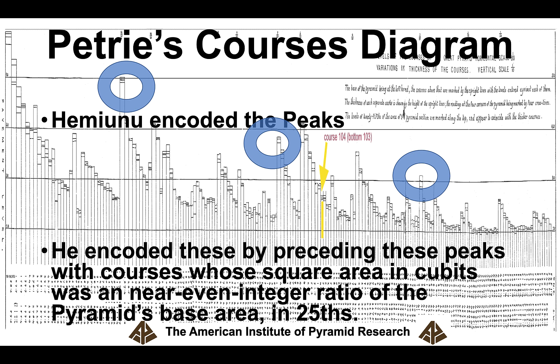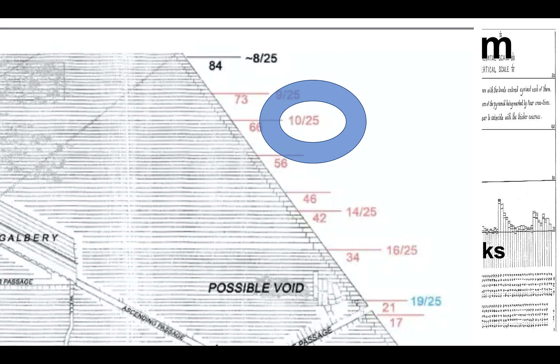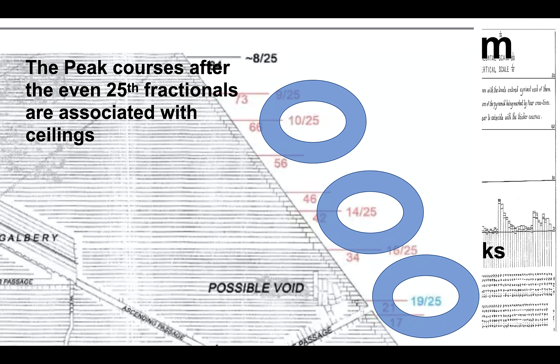Hemiunu encoded these different peaks by preceding them with courses whose square area in cubits was a near even integer ratio of the pyramid's base. The idea is that you take the base area of every course — all 203 courses of the Great Pyramid each have an area — and some of those areas are almost an exact fractional ratio of 25ths of the base of the Great Pyramid. For instance, one course is 10/25ths, another is 14/25ths, and another is 19/25ths. The peak courses after these even 25th fractionals are associated with ceilings.